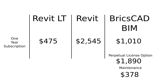Last but not least, let's take a look at price comparison. One year subscription of Revit LT costs $475, and full Revit costs $2,545. One year of BricsCAD BIM is $1,010 — so BricsCAD BIM is roughly two times more expensive than Revit LT and two and a half times less expensive than full Revit. However, Bricsys also offers a perpetual license for $1,890 with annual maintenance of $378, which is a much better deal in my opinion. You will start saving money after three years compared to a subscription.